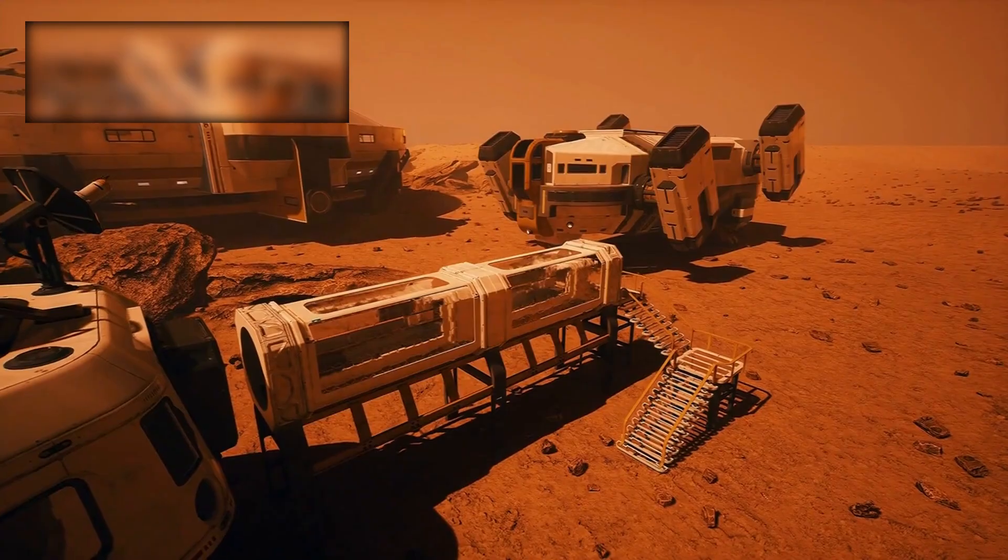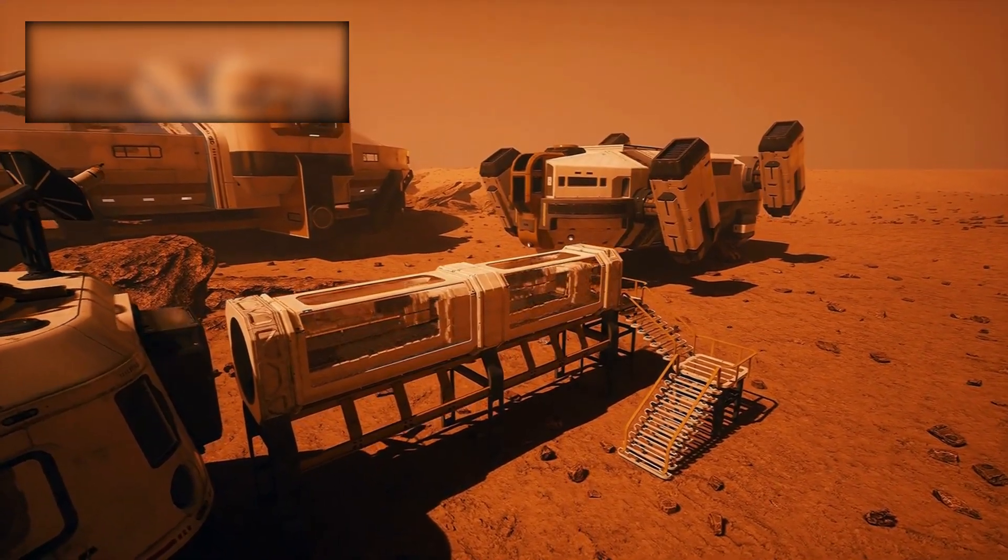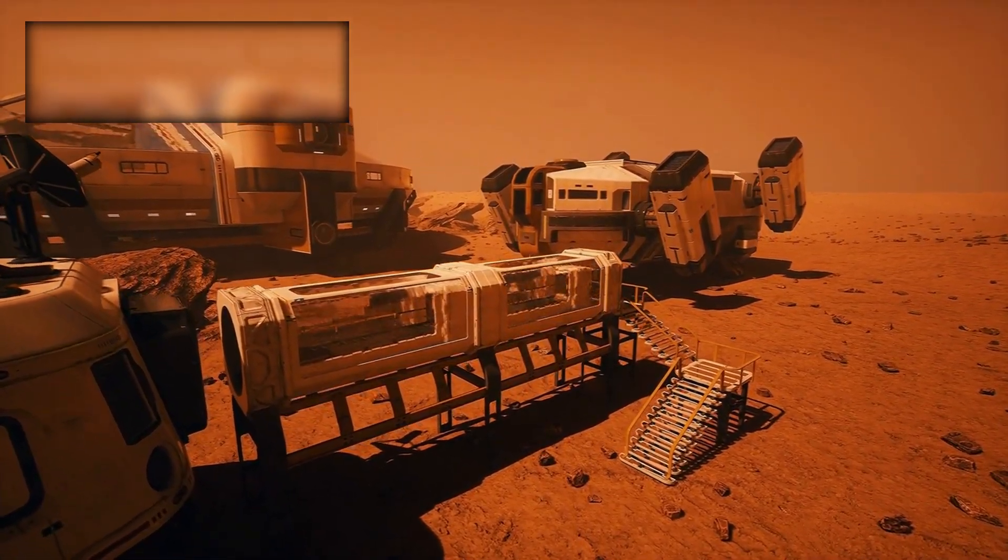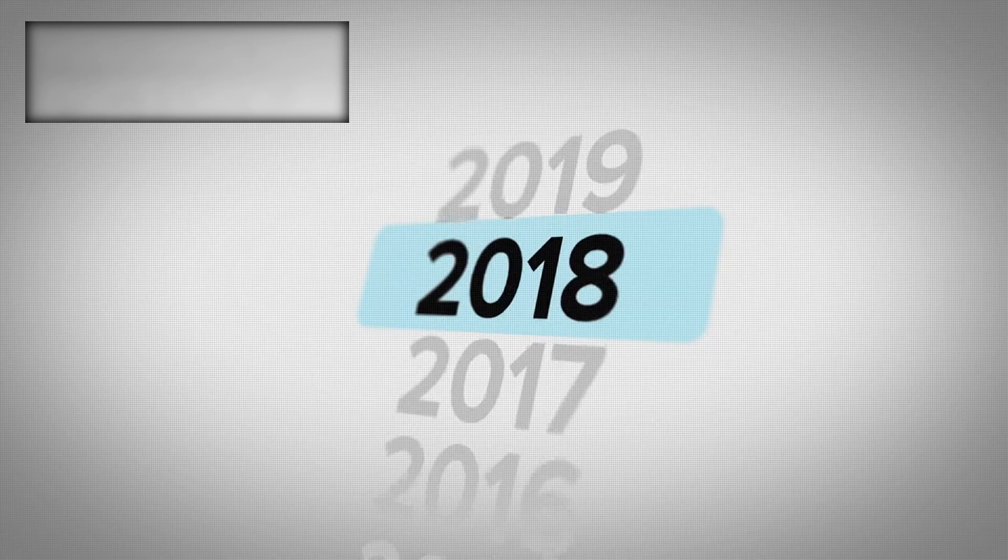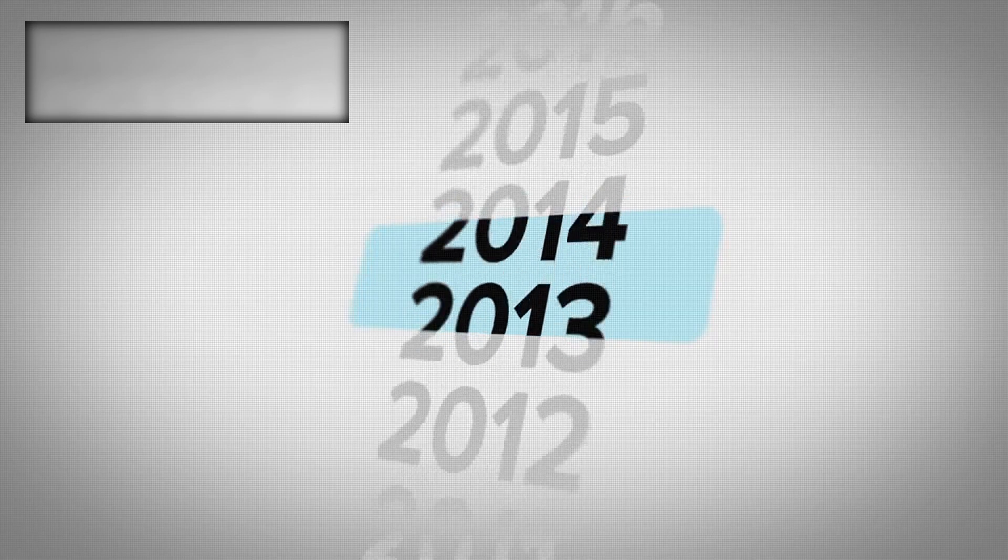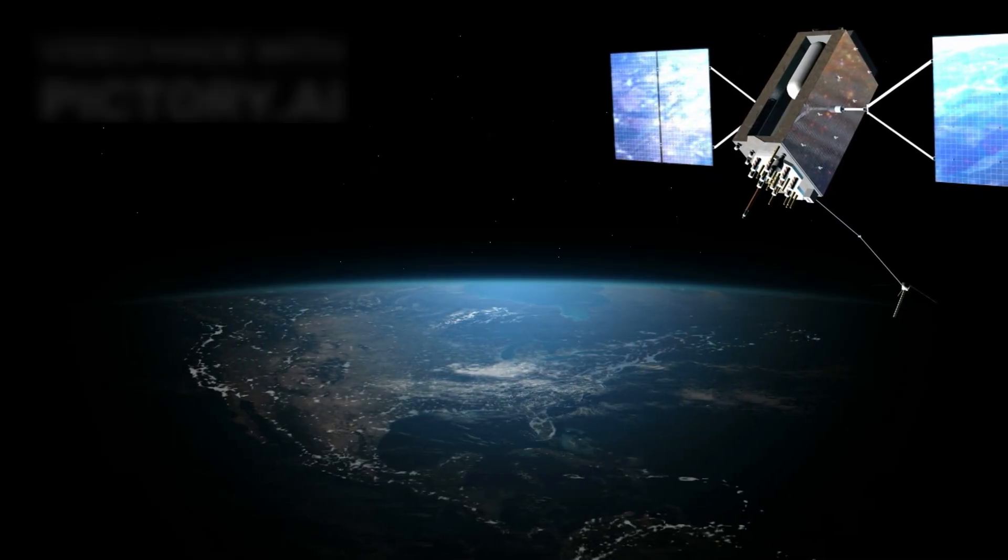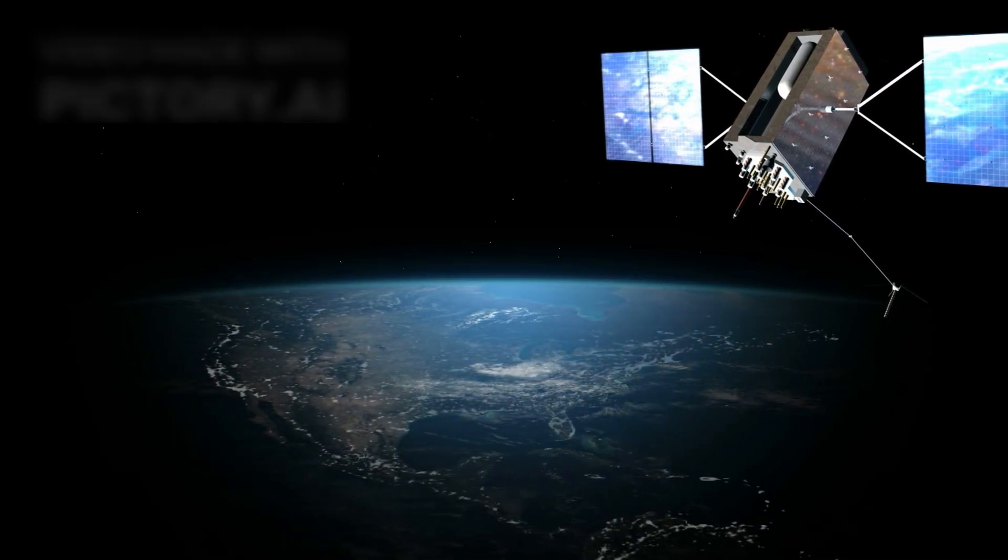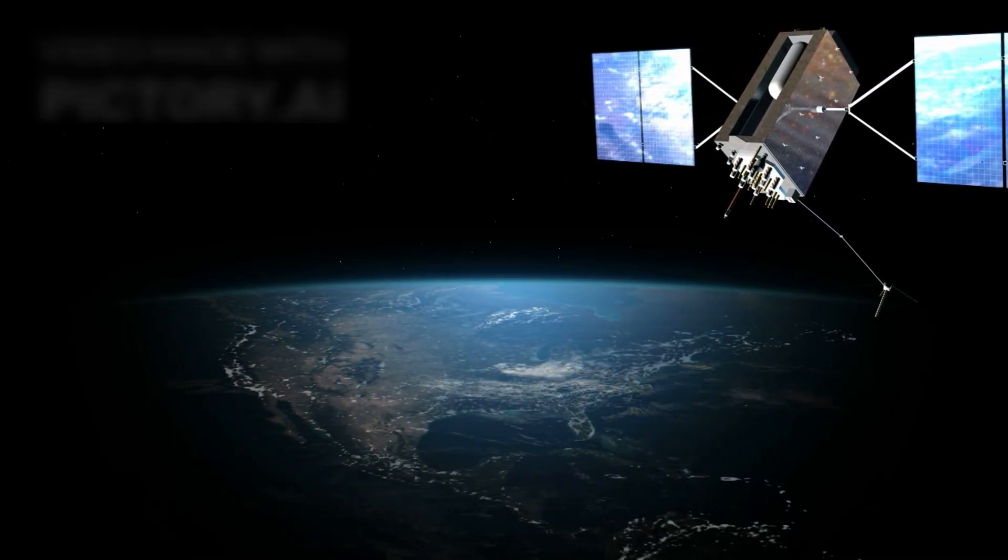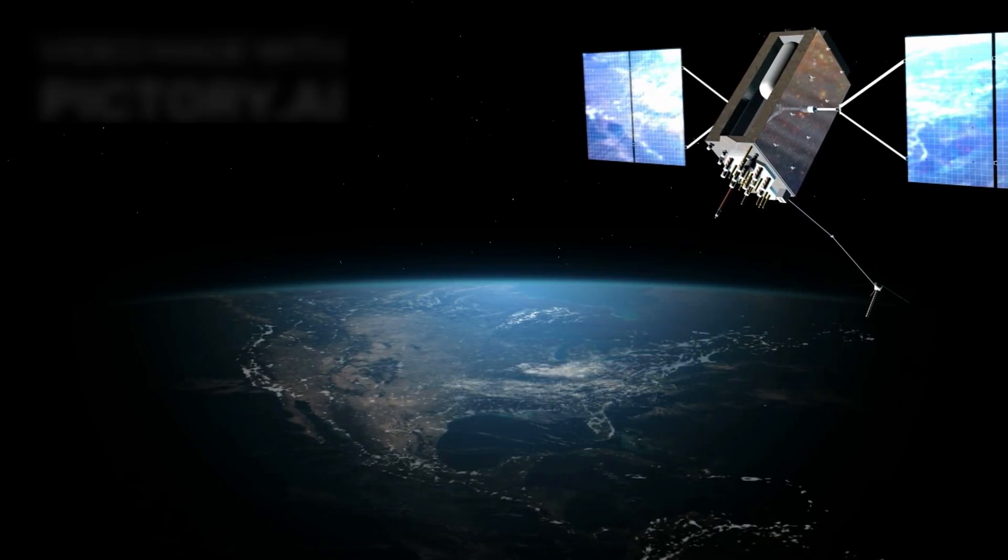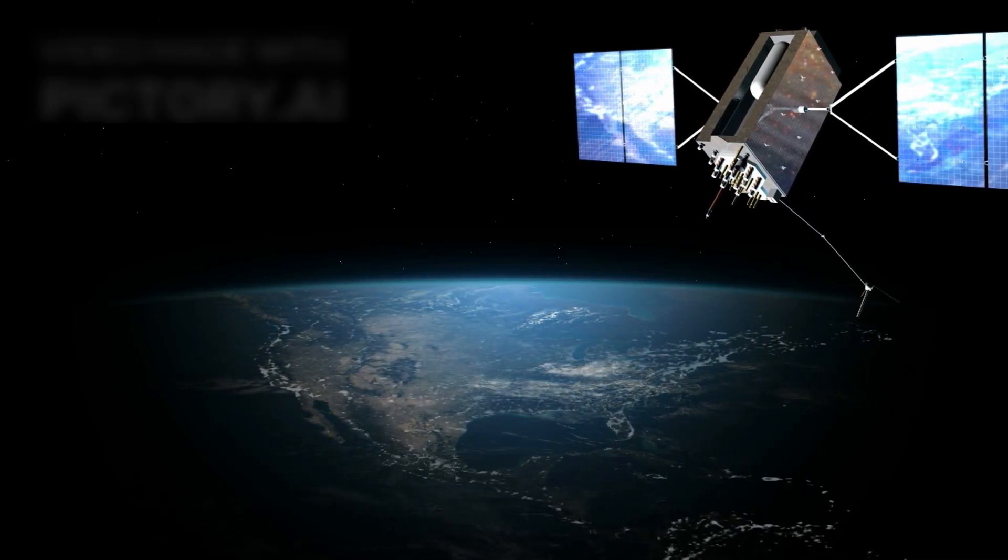Yet, Voyager 1's greatest achievement was not its flybys, but its persistence. Built for a five-year mission, it was never meant to last more than a decade. Its instruments were designed to handle radiation, cold, and the emptiness of space, but even the most optimistic engineers could not have predicted it would still be operational more than 45 years later.